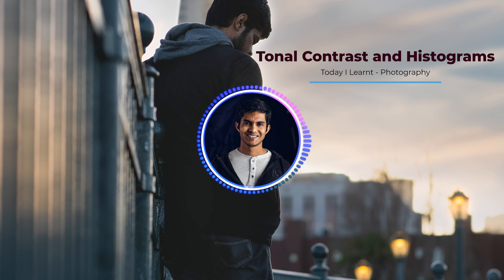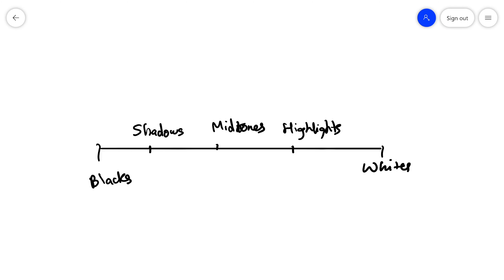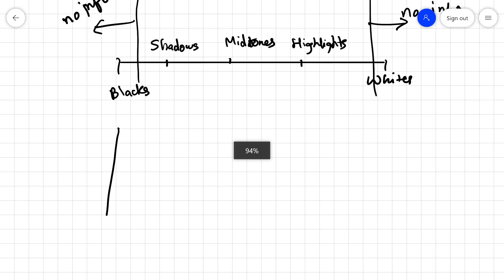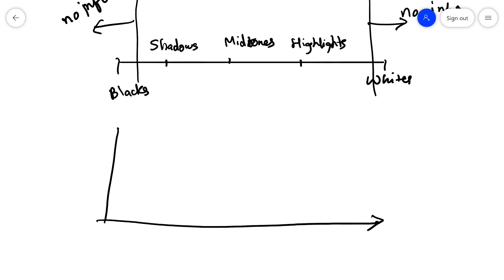Before we dive into tonal contrast, you need to know about histograms. Everything in the black and white regions of a tone scale has no detail — no color information, no edge information — because it's too bright or too dark for your camera to capture. Everything in between has some information. This tone scale can be mapped to a graph, which is what we call a histogram. The x-axis represents tones from black to white.